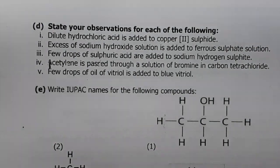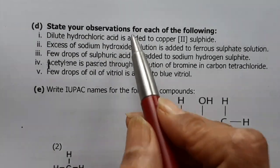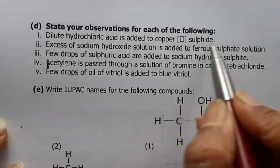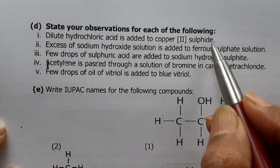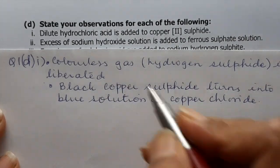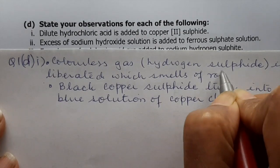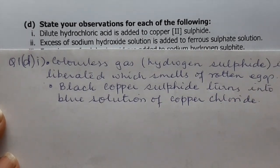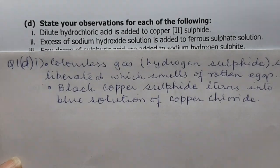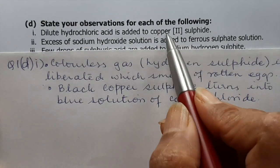Question 1d asks you to state all observations you can possibly see. (i) Dilute hydrochloric acid is added to copper sulfide: sulfide reacting with acid gives H₂S gas — write that colourless hydrogen sulfide gas is liberated which smells of rotten eggs. Also, black copper sulfide turns into a blue solution of copper chloride.